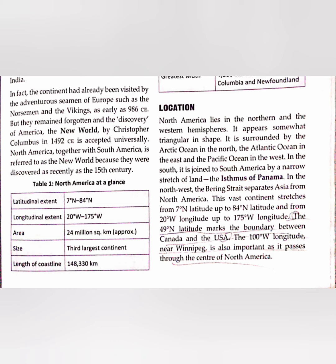North America lies in the northern and western hemispheres of the world. It is somewhat triangular in shape and is surrounded by the Arctic Ocean in the north, the Atlantic Ocean in the east, and the Pacific Ocean in the west. It is joined to South America by the Isthmus of Panama.